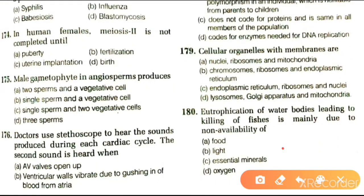Next question: eutrophication of water bodies leading to killing of fishes is mainly due to non-availability of food, light, essential minerals, or oxygen. The answer is essential minerals, because eutrophication is a process where water bodies receive excessive nutrients that stimulate excessive plant growth.